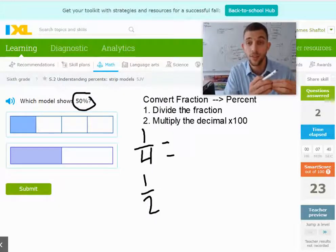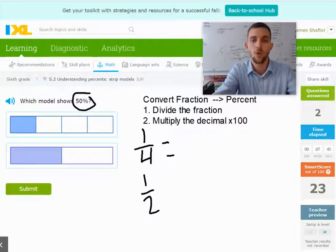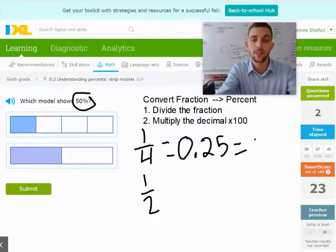And if I take 1 fourth, this is one that you need to memorize. We take 1, and the fraction bar means divide. We divide by 4, and we get 0.25. And that's equal to 25 percent.